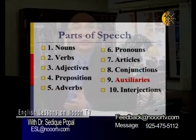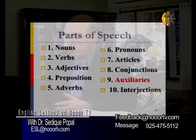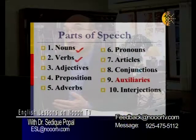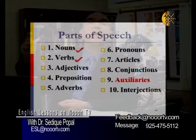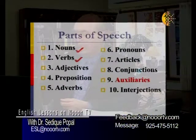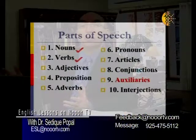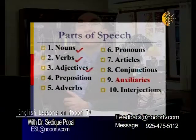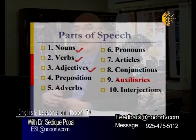So nouns, as we know, are names of people and things. Verbs could be actions or a state of being. Adjectives are words that tell you something about the noun — like what kind. For example, 'this is an expensive computer.' What kind of computer? Expensive. So 'expensive' tells you something about the computer. That's an adjective.